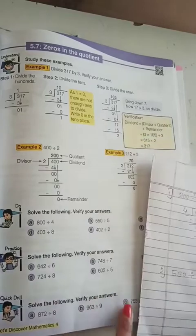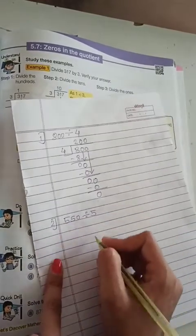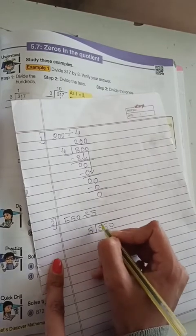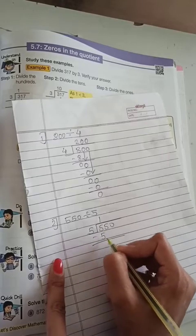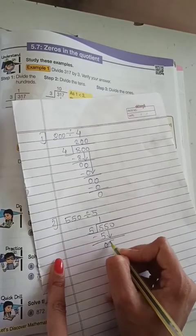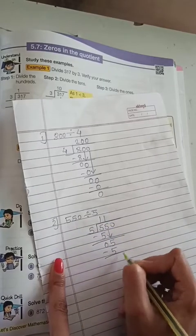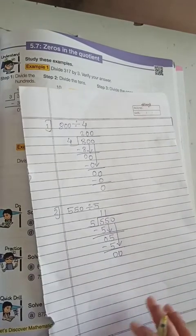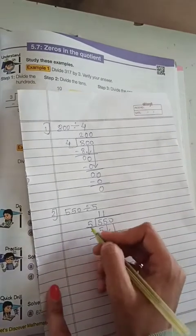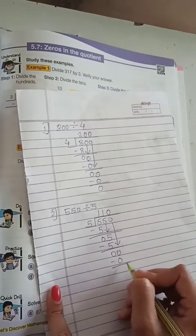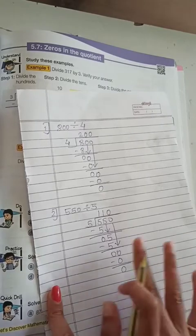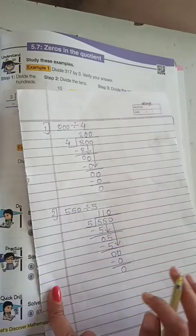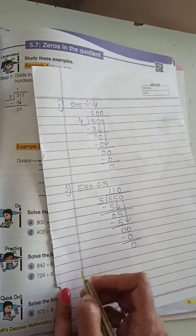550 divided by 5. Solve it. 5 and 5, 0. ابھی یہ 5 کو نیچے لاؤں. Again 5 and 5 — پھر سے 0 آیا. ابھی یہ 0 کو نیچے لاؤں. ابھی اس میں سے ہم کونسا نمبر مائنس کریں گے? 0 ہی کریں گے. اس لیے 5, 0, 0. 0 minus 0, 0. ابھی کوئی نمبر ہے? No. اگر آپ کو یہاں پہ 0 add کرنا ہے تو اوپر بھی پہلے 0 add کرنا ہی ہوگا، پھر ہی نیچے ہم 0 add کر سکتے ہیں.